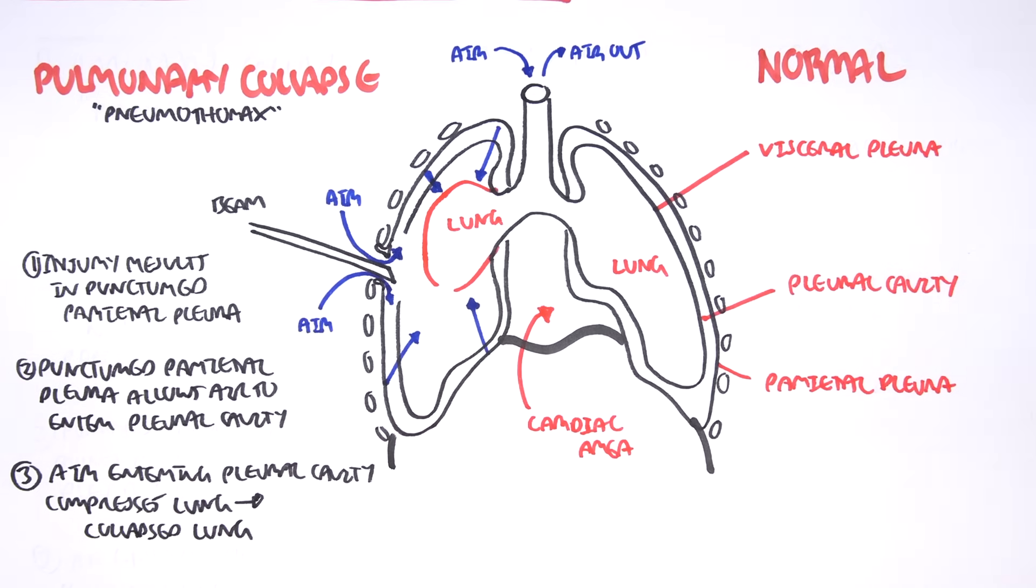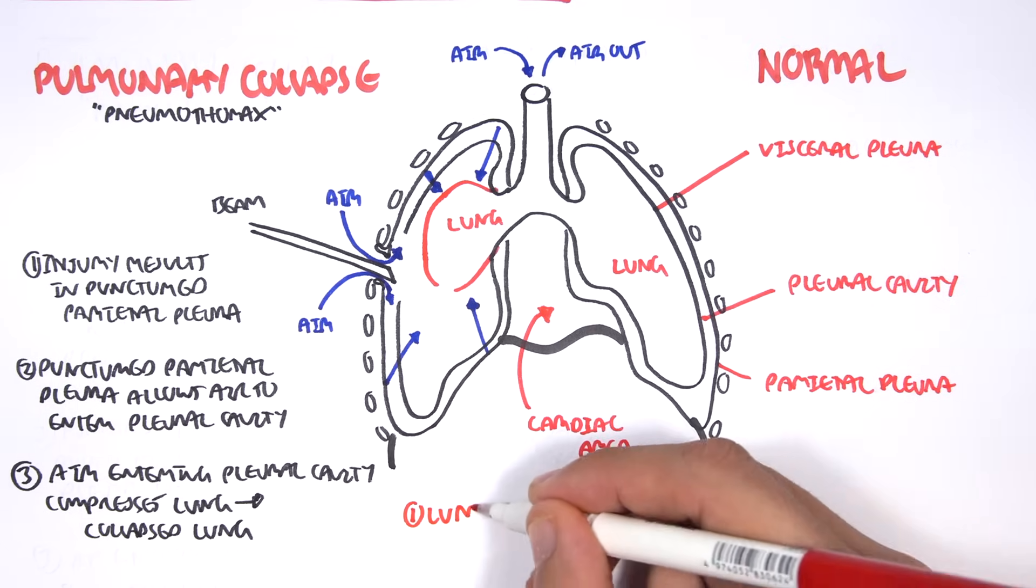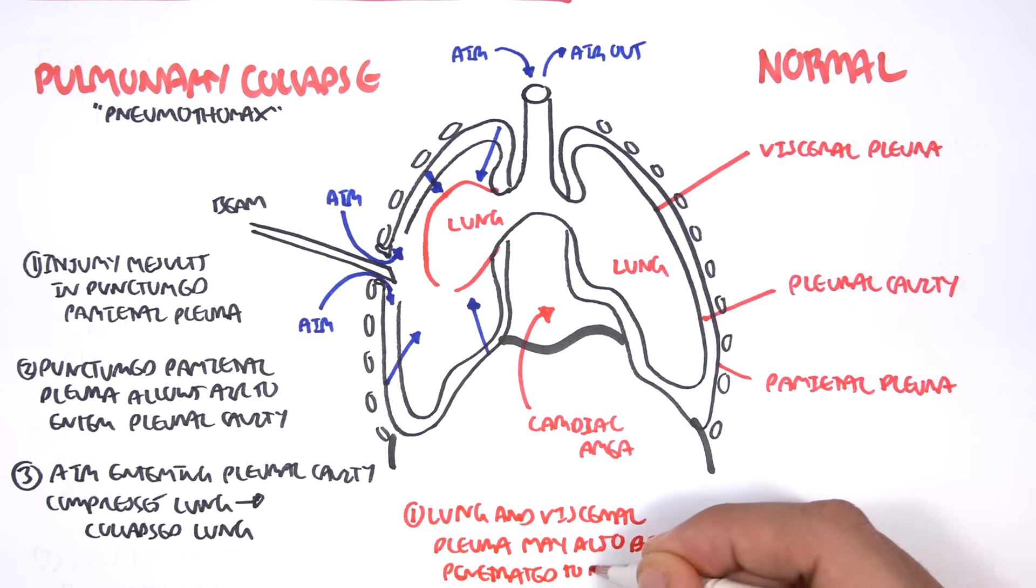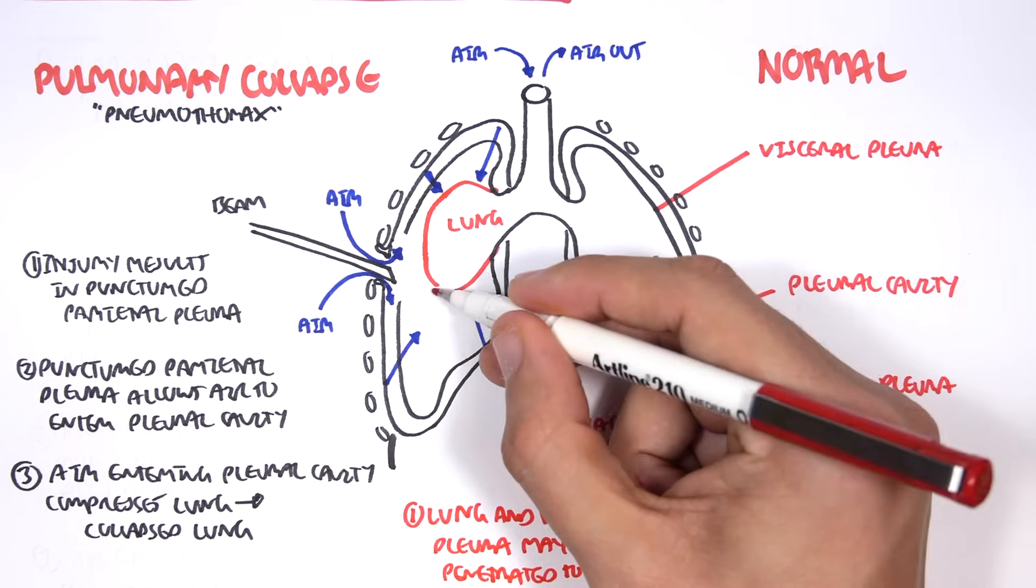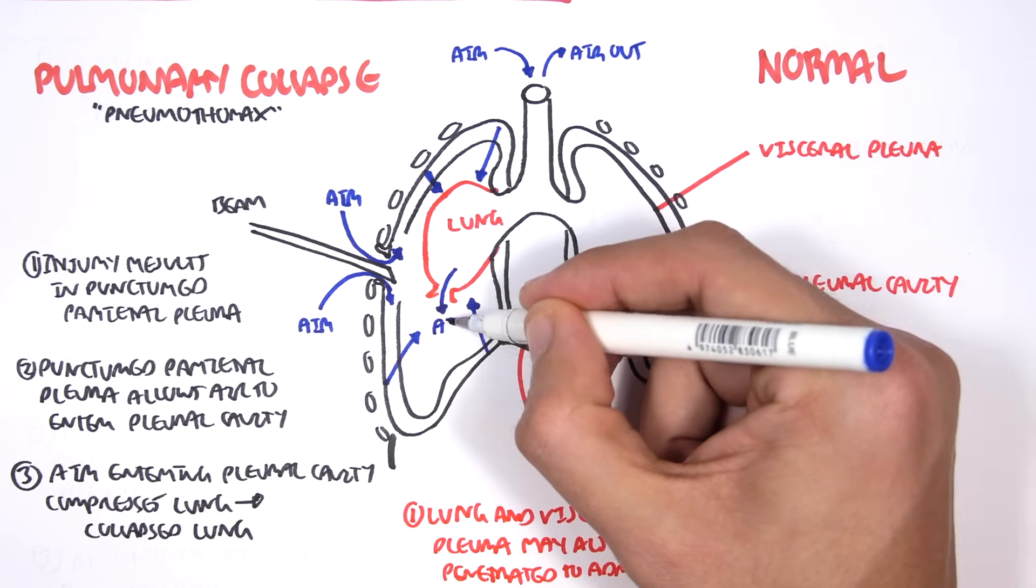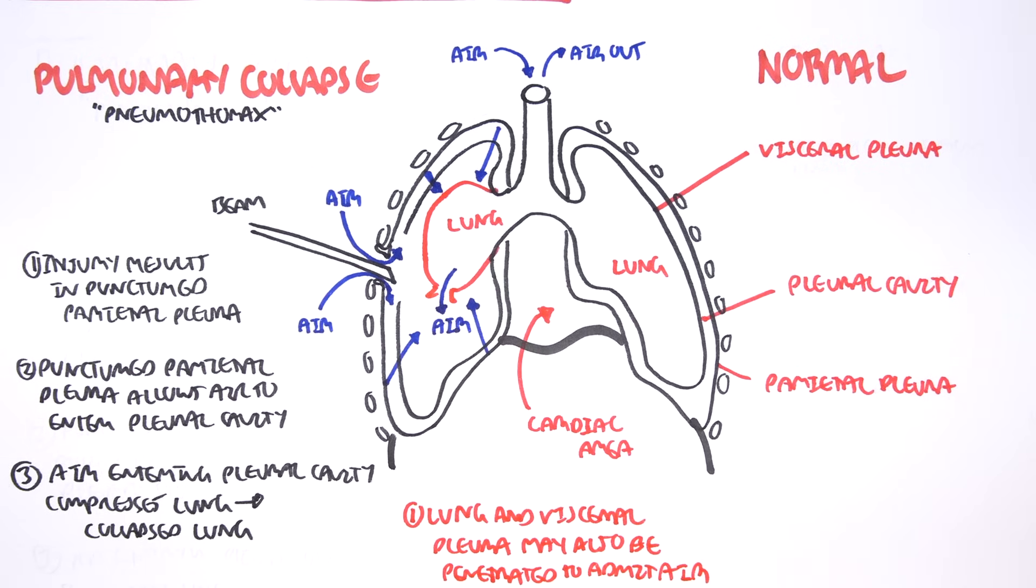However, what we looked at was pneumothorax occurring as a result of an external trauma. What is important to know is that a pneumothorax can also occur when the lung and visceral pleura is damaged, resulting in air filling the pleural cavity, causing a pneumothorax as well. This can be seen in lung diseases such as COPD or in tall skinny people who have predisposition for spontaneous pneumothorax.